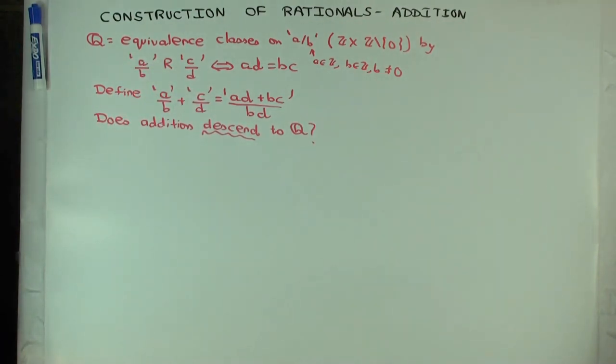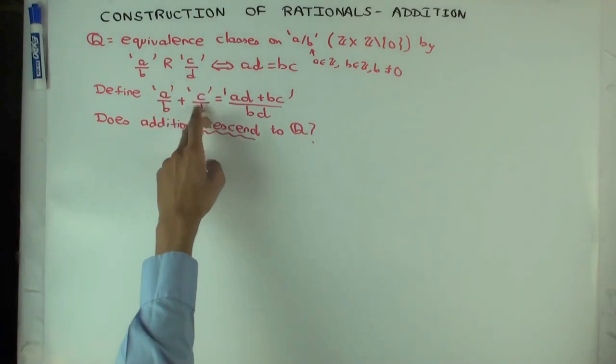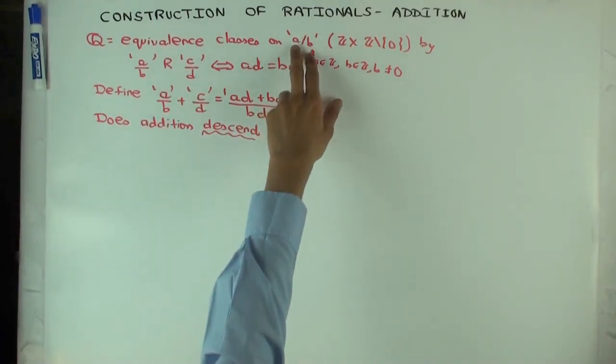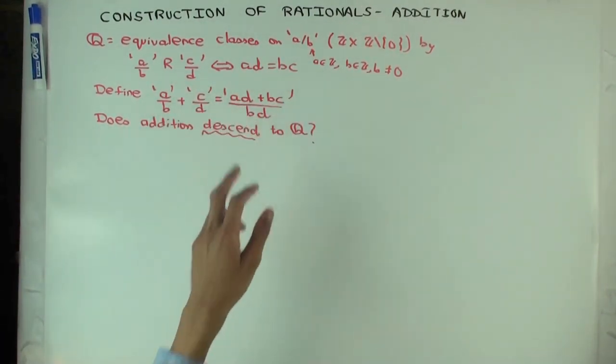Each rational number is actually an equivalence class of all things of this form which are related to each other. Now I want to define addition of rational numbers. But before doing that, I first define an operation addition of these pairs, which I define like this.